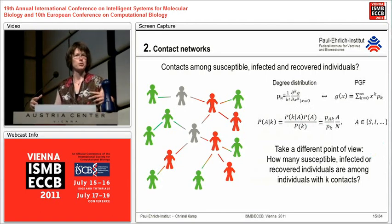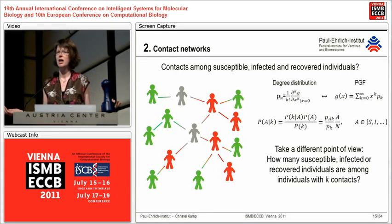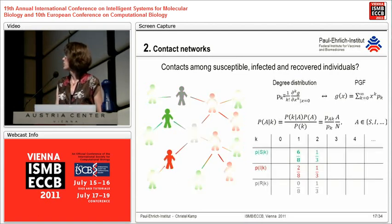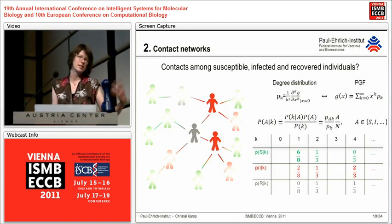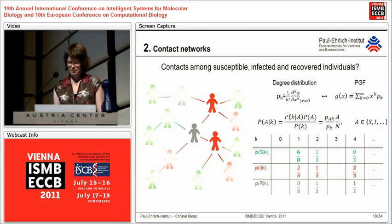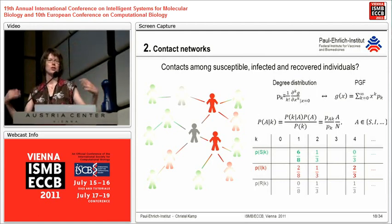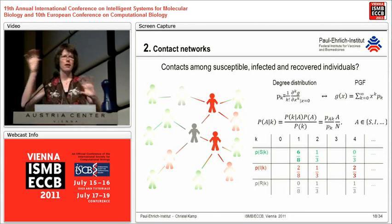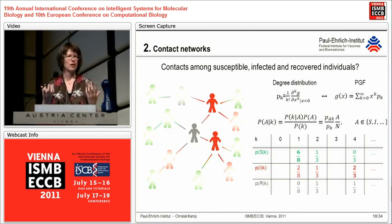You could also take an alternative perspective: given that I have a certain number of contacts along which transmission could possibly occur, how likely is it that I am still susceptible, already infected, or already recovered? If you have few contacts, you're more likely to stay longer susceptible and healthy, whereas if you have many contacts, it's rather likely that you are infected or already recovered, depending on the stage of disease. But this is just a static snapshot — what you really would like to do is follow the evolution of the topology.